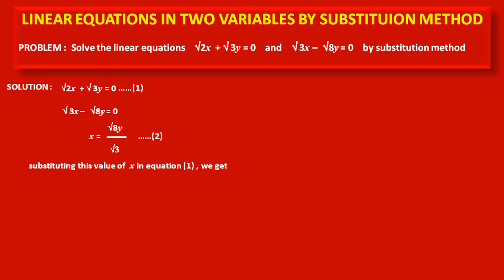Since we have to solve this by substitution method, substituting the value of x from statement 2 into equation 1, we get root 2 into (root 8y upon root 3) plus root 3y is equal to 0. Solving this, we get root 2 into root 8y plus root 3 into root 3y all over root 3, with the common denominator root 3 shifting to the right-hand side becoming 0.